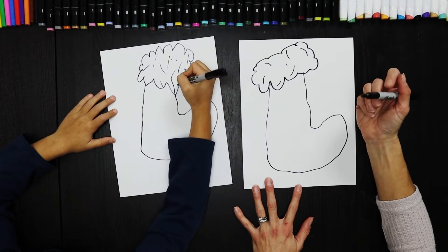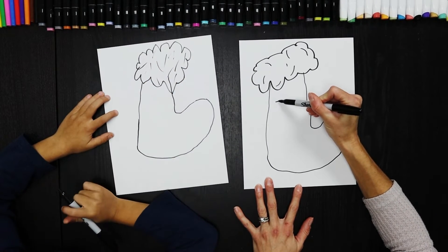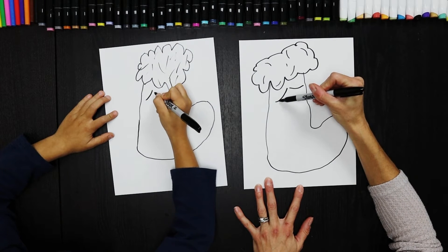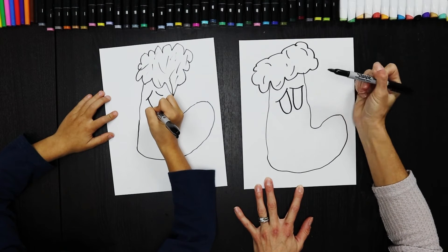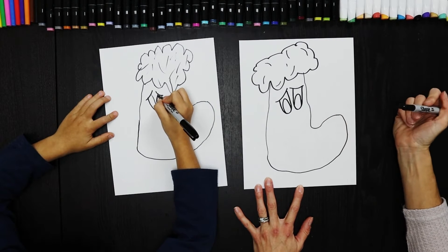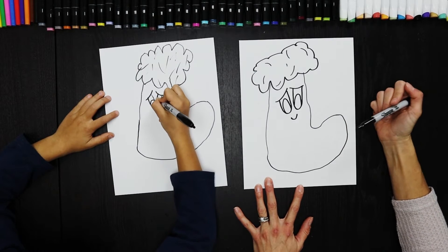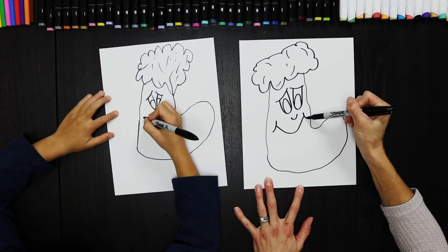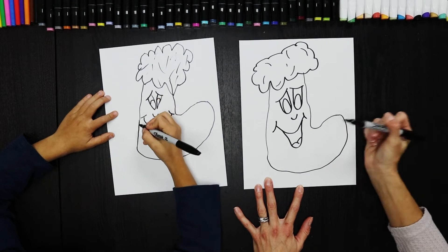And then what we're gonna do is we're gonna give it a silly face. Okay, so we are going to do one here, one here, we're gonna do a guy here, big guy here, eyeball here, eyeball here, eyeball here. Good, we're gonna give him a little nose and then we're gonna give him a really fun mouth. Give him even a little tongue in there.